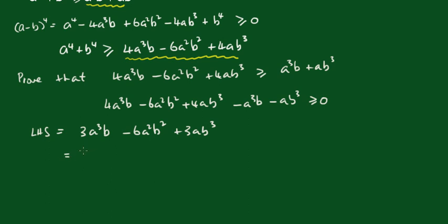We'll take out 3ab, and we get a^2 - 2ab + b^2. Isn't that nice? Factorizing this, we get 3ab(a-b)^2.